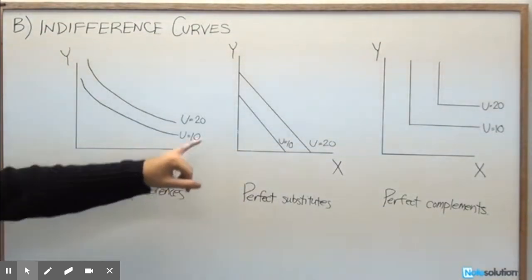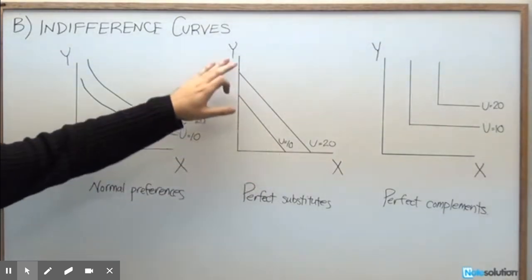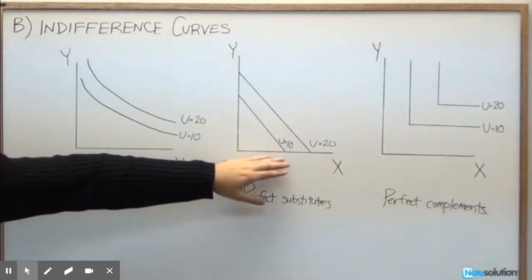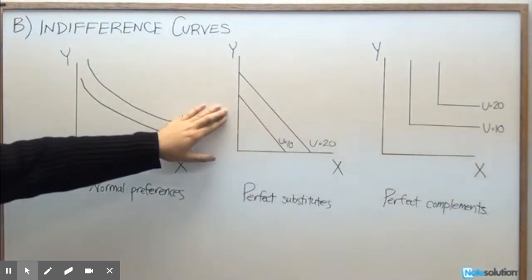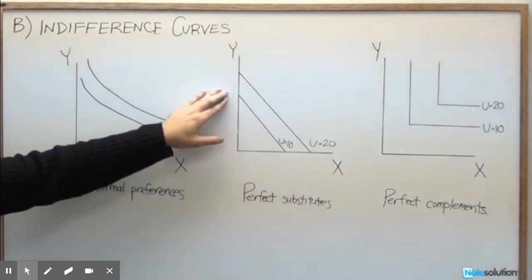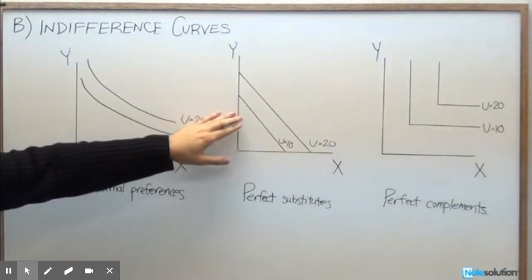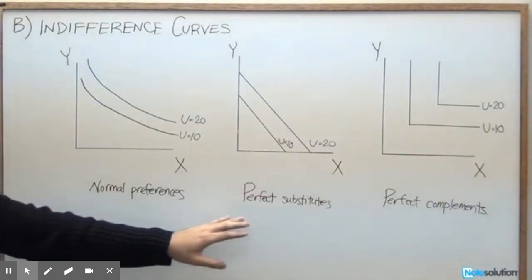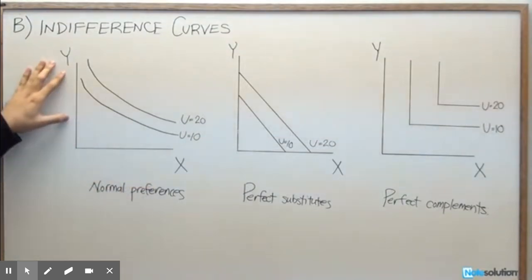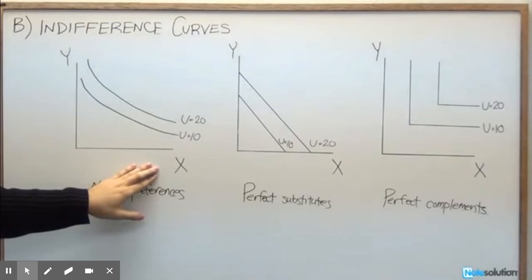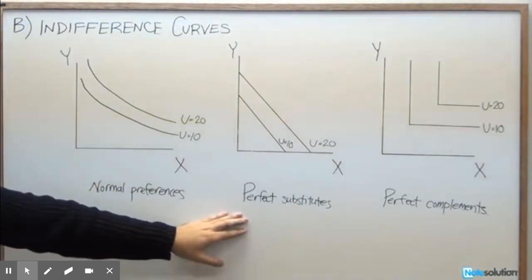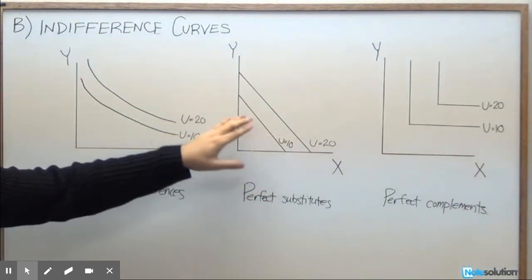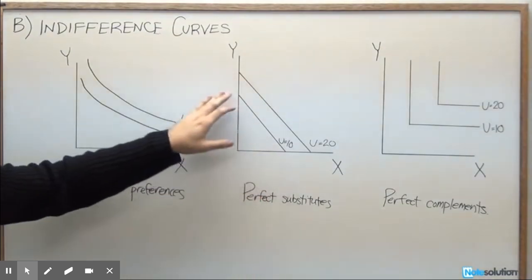What the straight-line indifference curve represents is that the marginal rate of substitution is equal everywhere along the curve — there is no diminishing marginal returns effect. What kinds of situations might we have with perfect substitutes? For example, coke and pepsi: you might be equally happy drinking only coke or only pepsi. In this case, having only one good or the other will give you the same utility value — whether a utility value of 10 or, with more income, a utility value of 20.